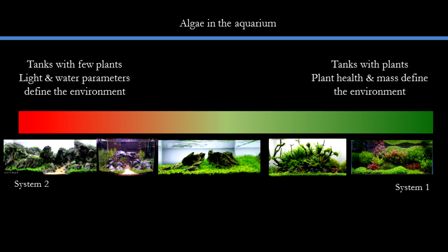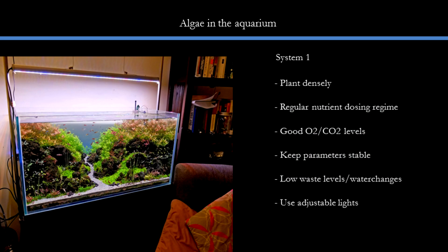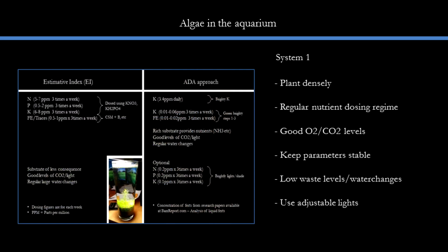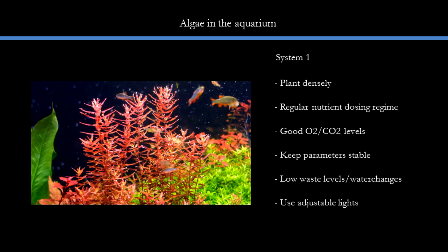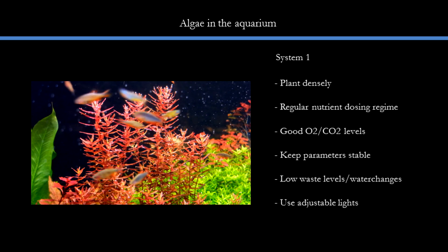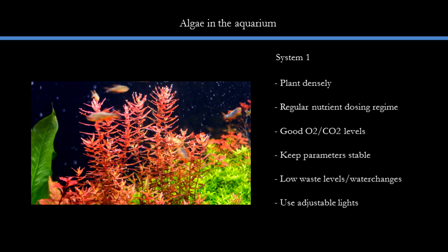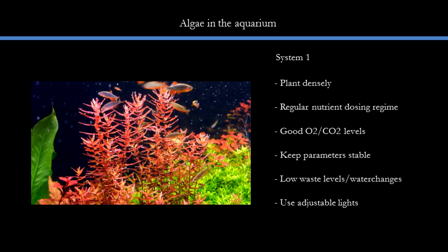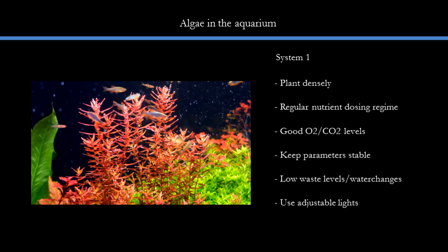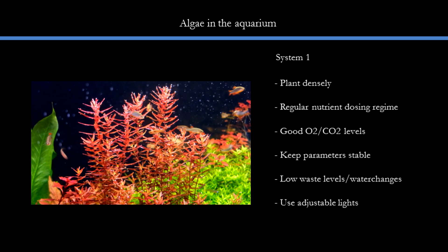I shall name them System 1 and System 2. In System 1 tanks, the main concern is keeping the large plant mass healthy. You should have at least a regular dosing regime — it doesn't matter if it's rich or leaner, but it needs to be sufficient enough to feed the plants and let them grow constantly. Good O2 and CO2 levels help; good CO2 levels help plants a lot since plants are 40% carbon by dry mass, and once you do not have adequate CO2, most plant growth will slow down. Most casual hobbyists ignore the oxygen component, thinking that plants can supply all the oxygen requirement in the tank.